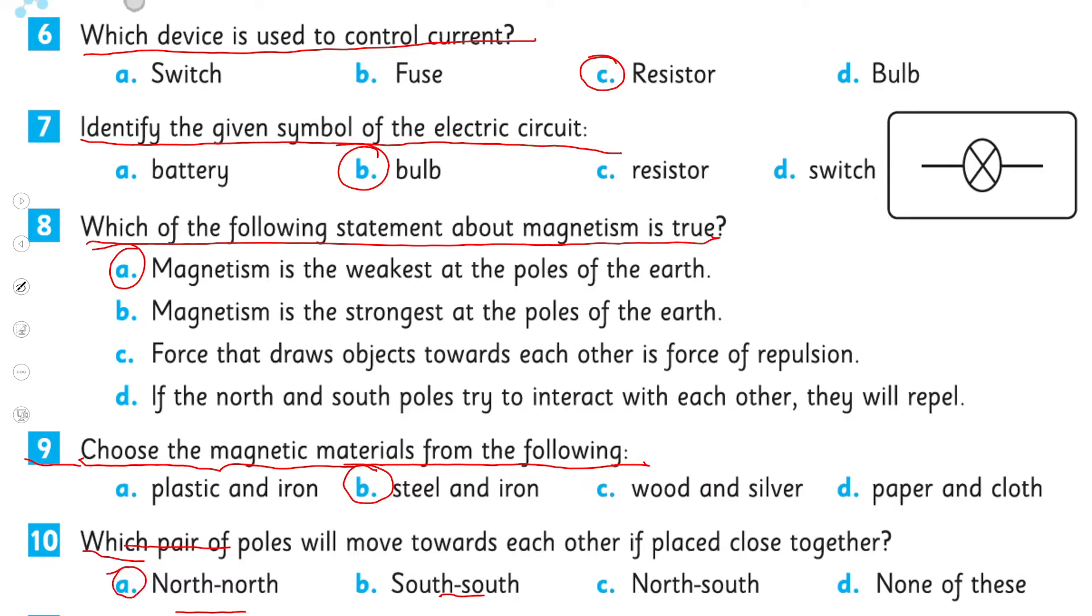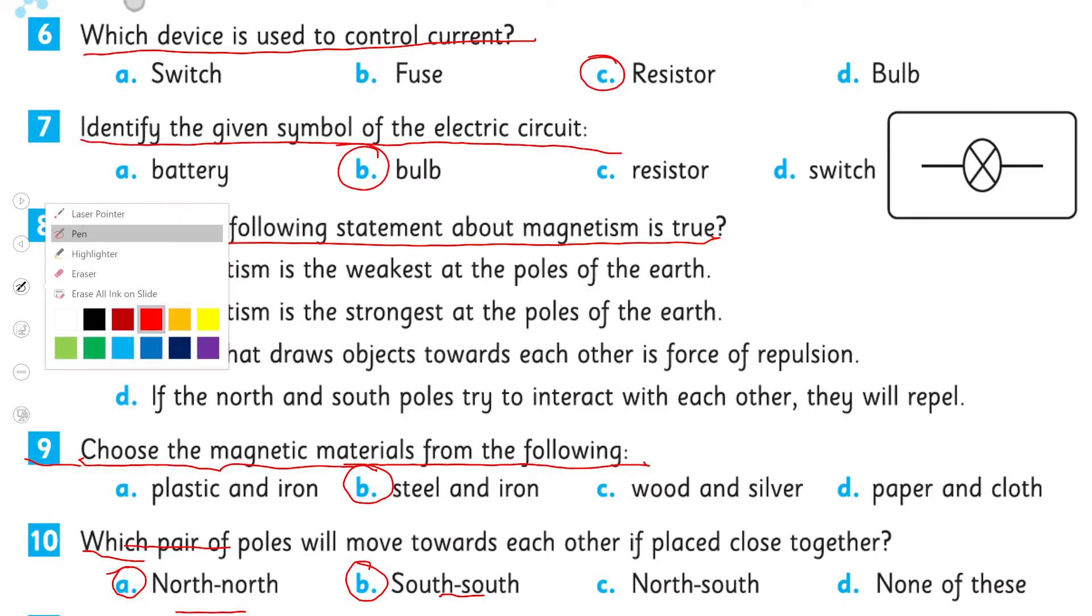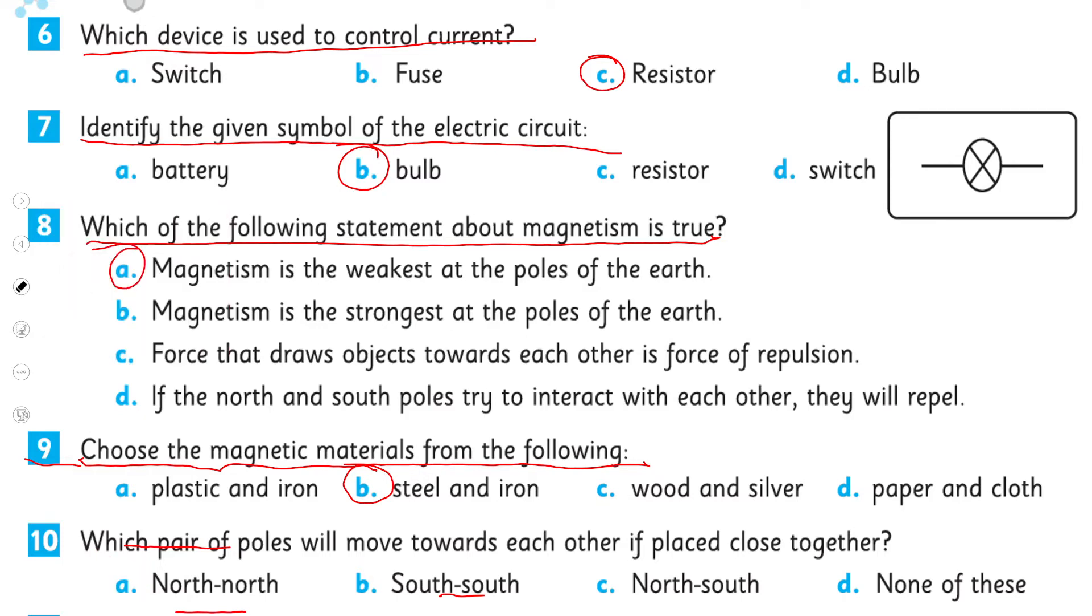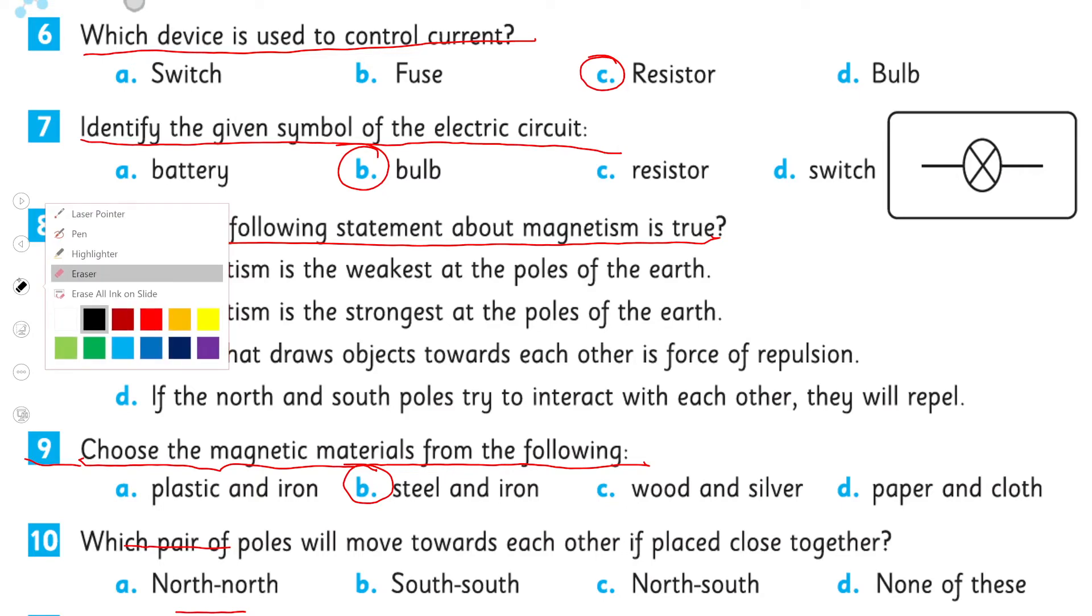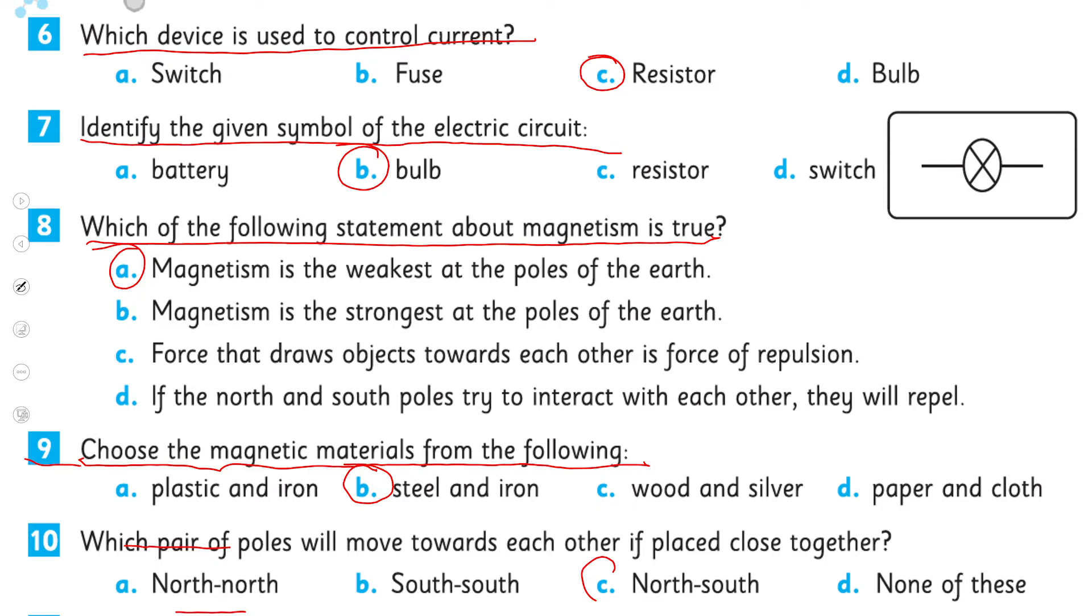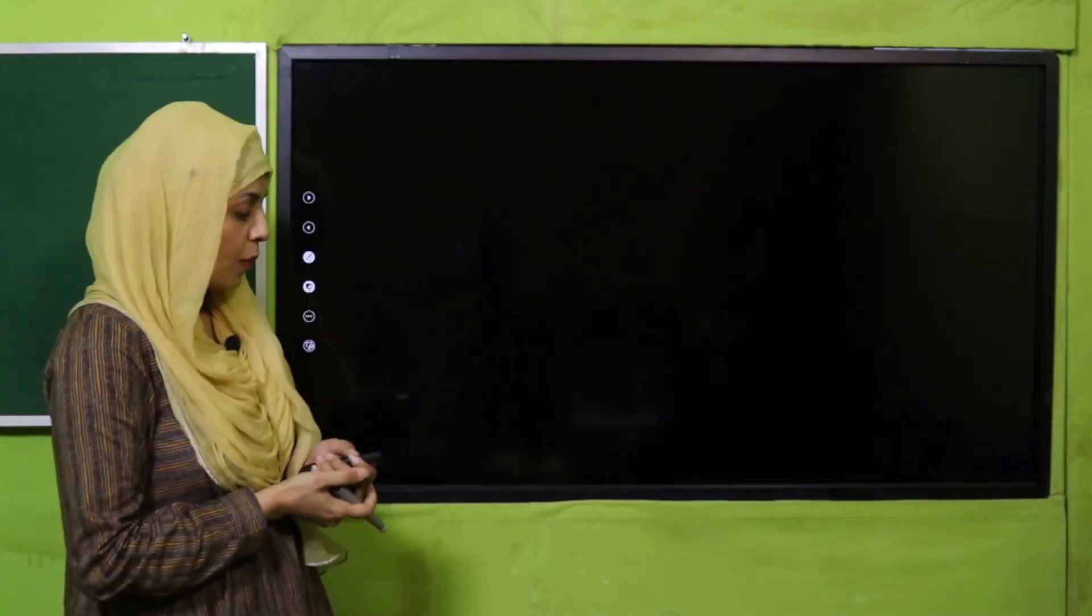So north and south will move towards each other if they are placed together. So that means it is north and south. So quickly pause the video and complete the pages. I hope everybody has done it. Now let's quickly move forward.